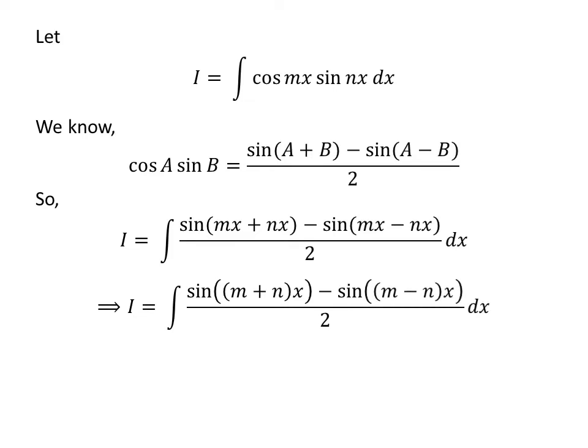Let us take out the common factor x. We get I is equal to the integral of sine of m plus n times x, minus sine of m minus n times x, upon 2, with respect to x.